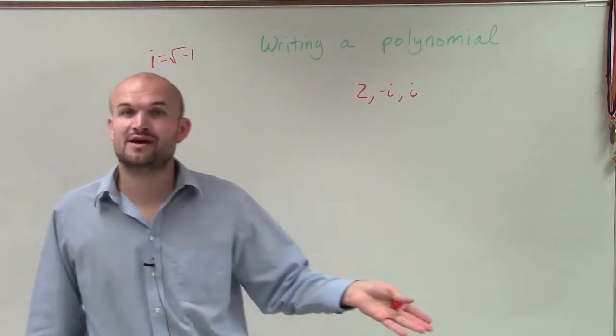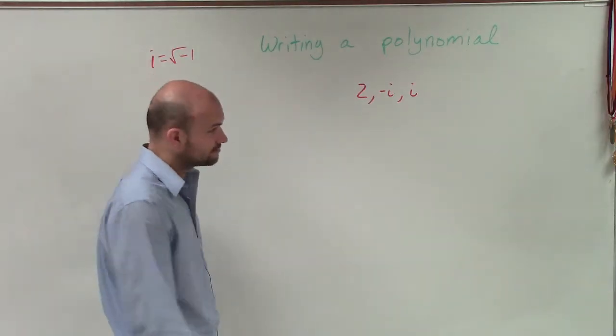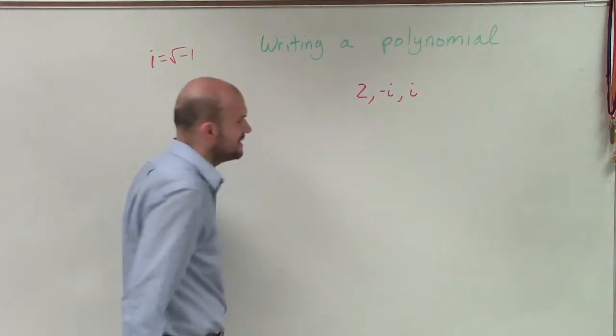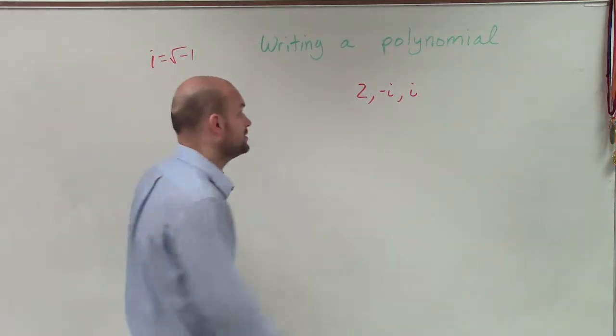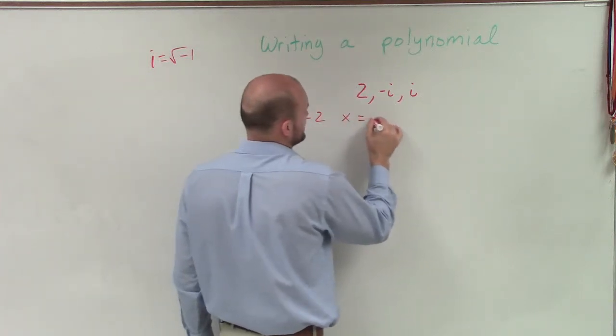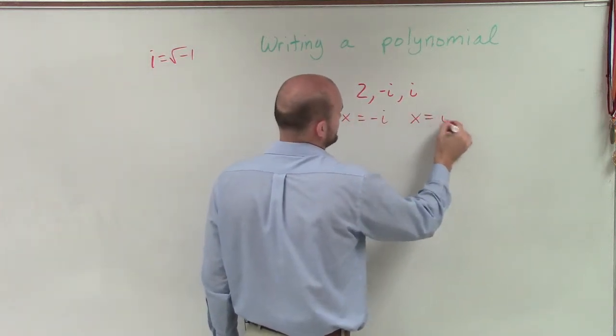And that also works for if we have the square root of a number as well. So in this case, I have 2, negative i, and i, and I need to write the polynomial. So I'm going to list my zeros as x equals 2, x equals negative i, and x equals i.